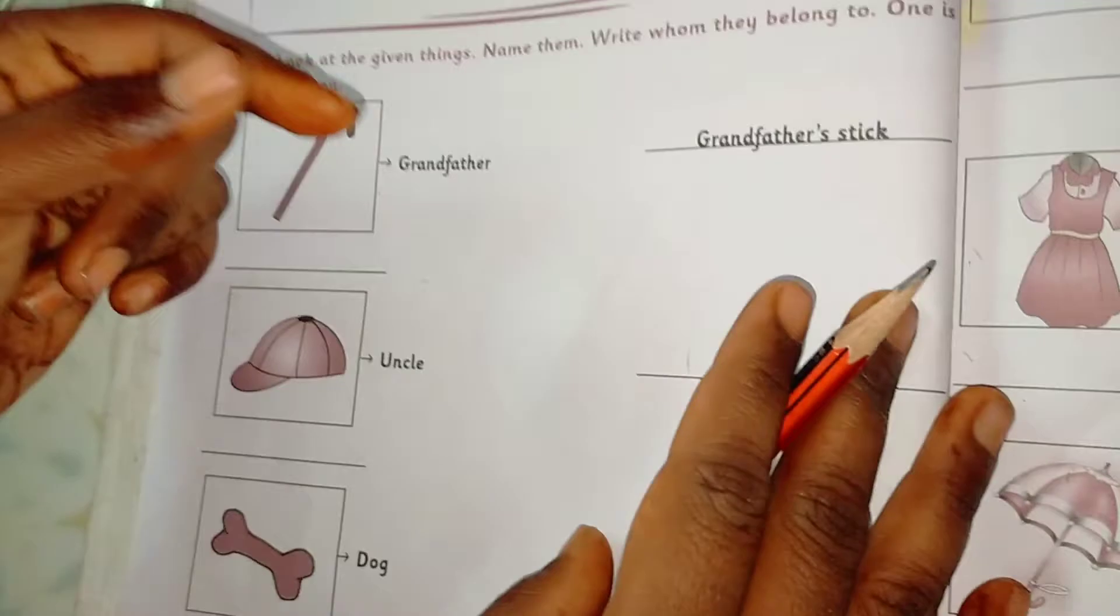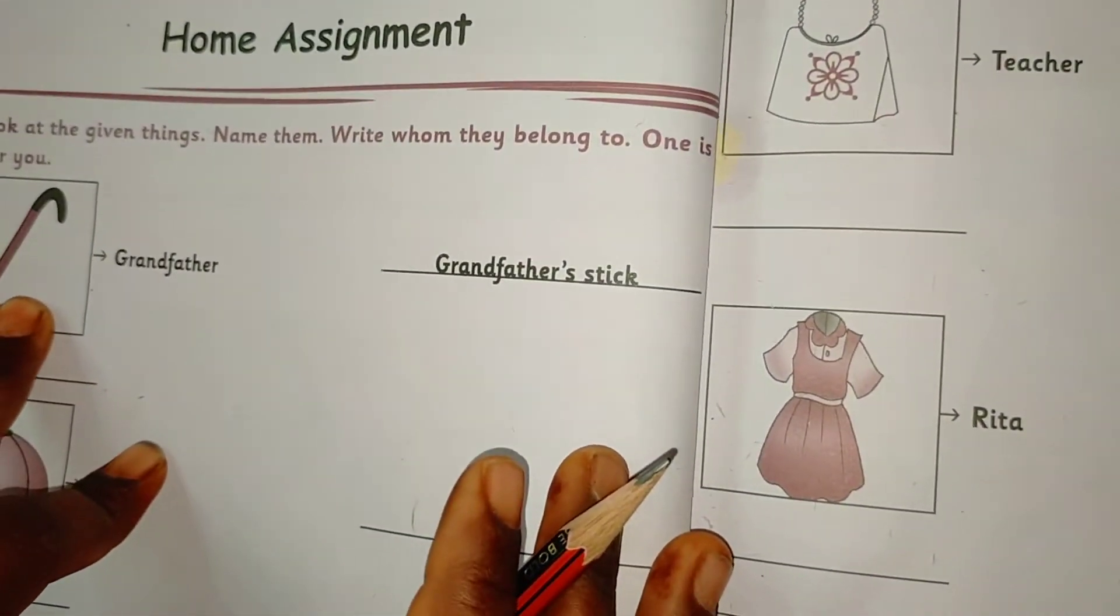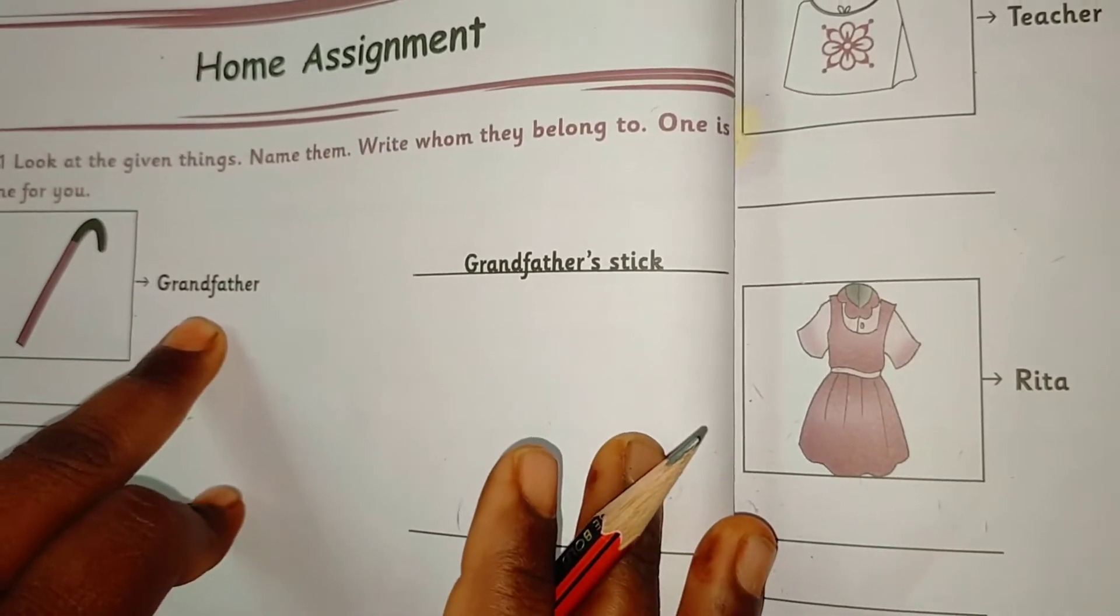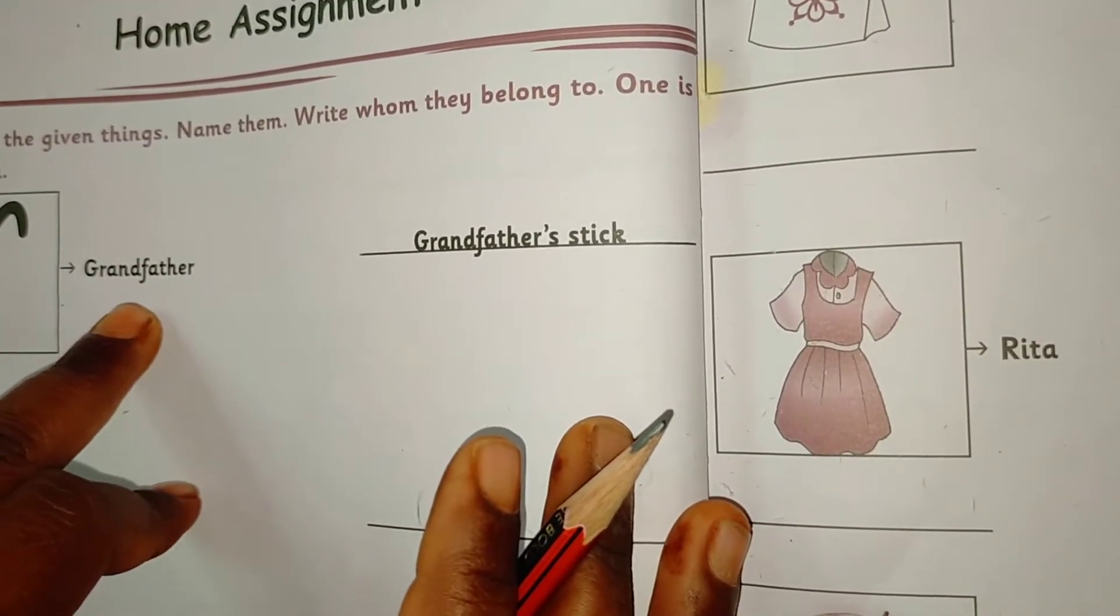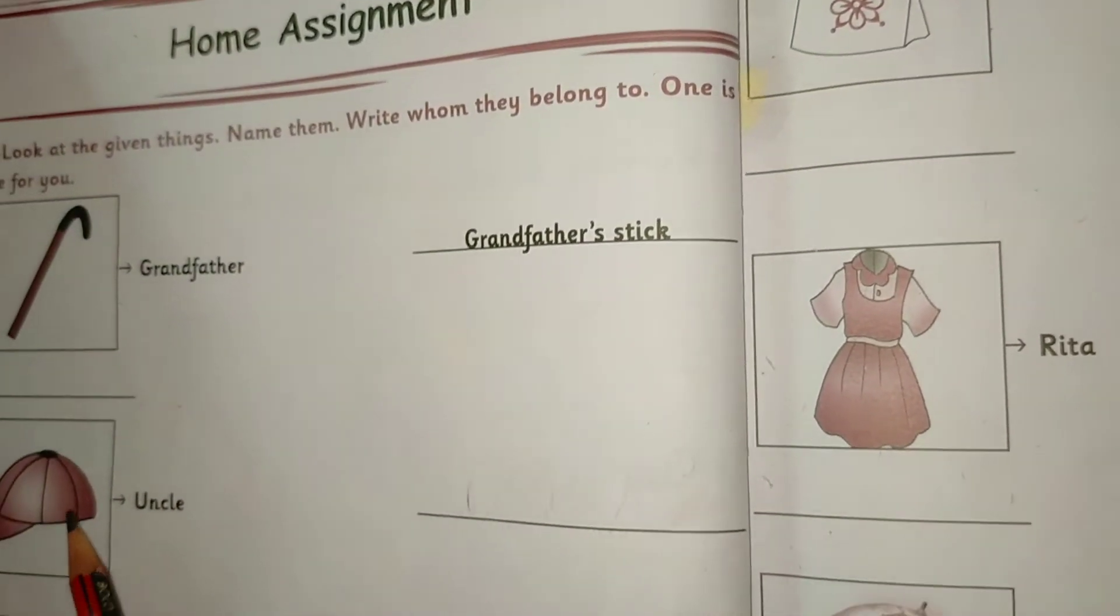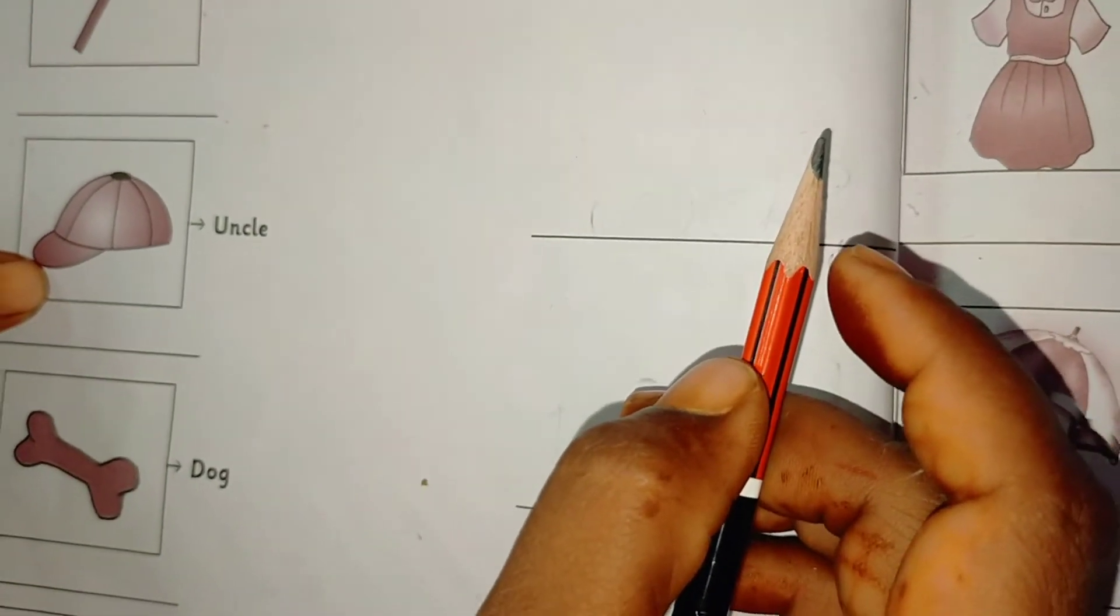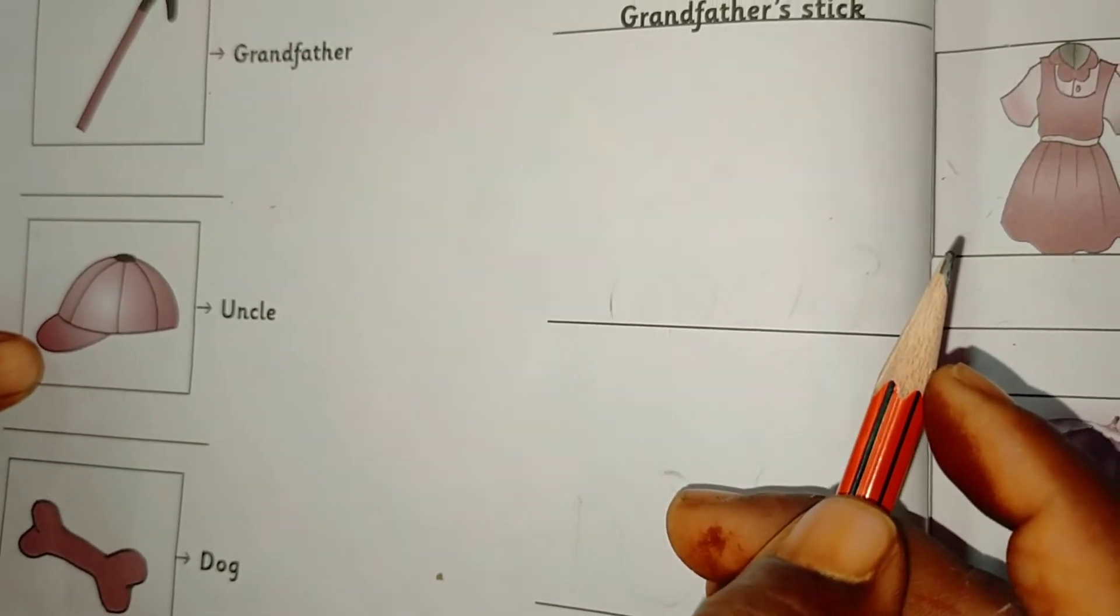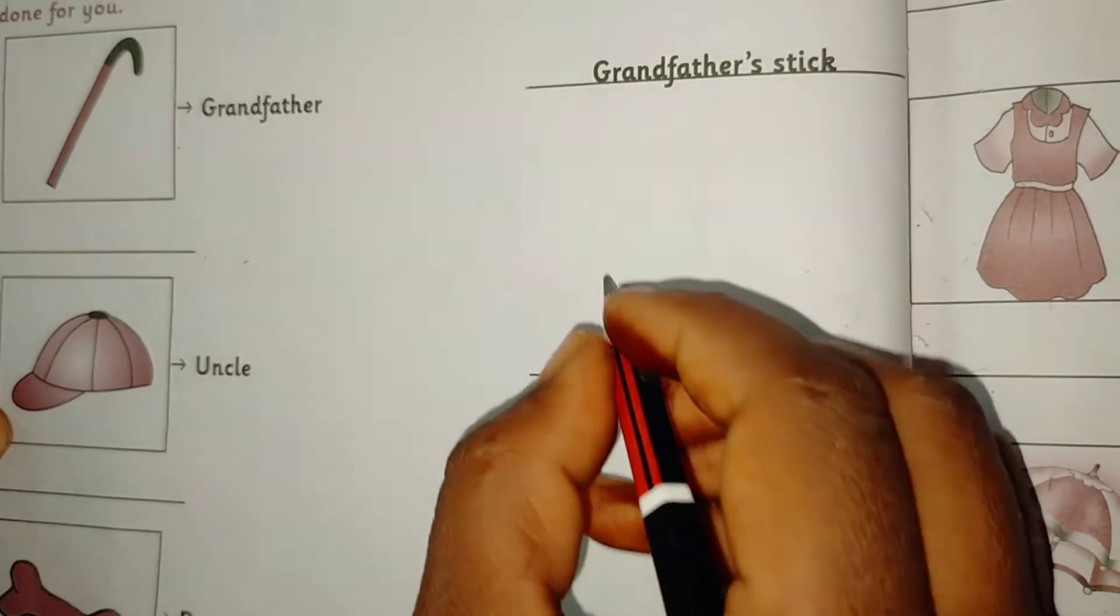A stick. What is this? This is a stick. Who uses the stick? Grandfather always uses a stick. Grandfather's stick. Uncle, look at this picture. There is a cap.